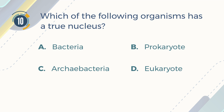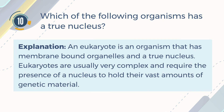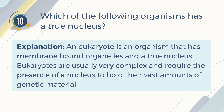The correct answer is D. Eukaryote. Explanation: A eukaryote is an organism that has membrane-bound organelles and a true nucleus. Eukaryotes are usually very complex and require the presence of a nucleus to hold their vast amounts of genetic material.